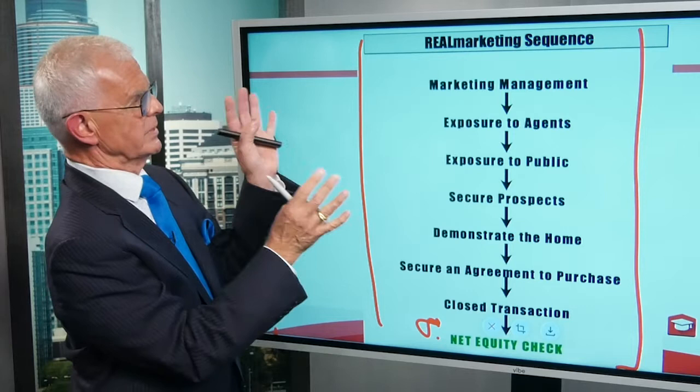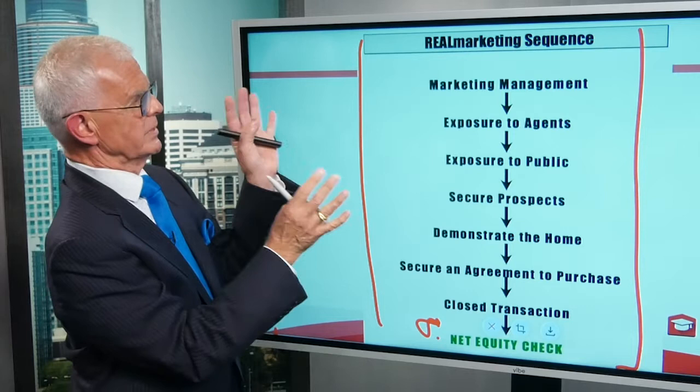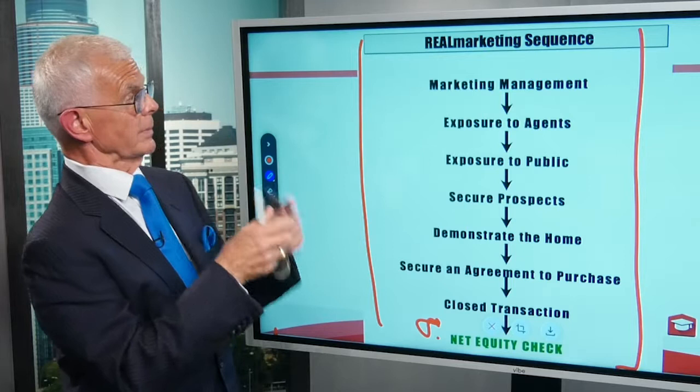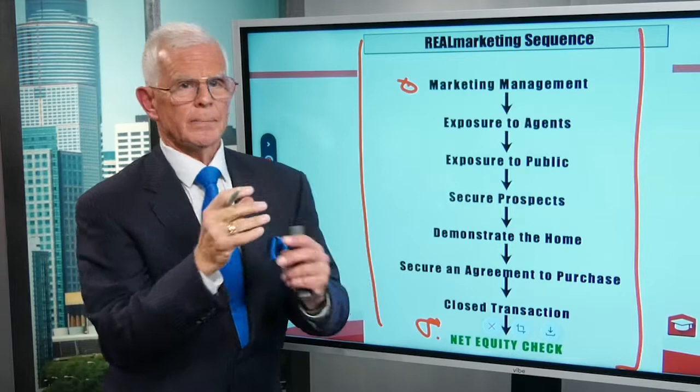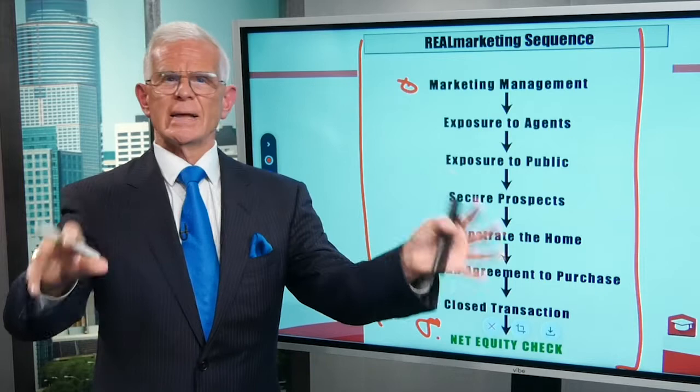Mr. and Mrs. Seller, I want to show you the steps of selling a home in any market anywhere. And by the way, you can tell me which of these you'd like me to focus on more. So step one is marketing management. This is where you talk about arranging photos and the multiple listing service and all the data collection that goes into the beginning of it and managing the online marketing.